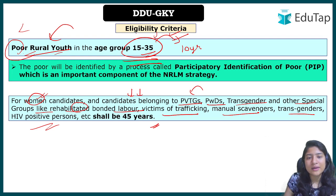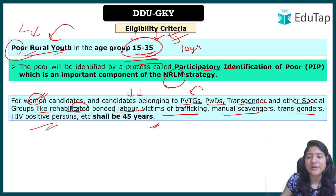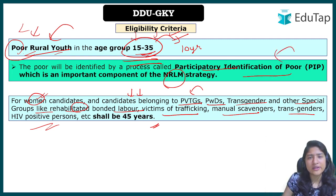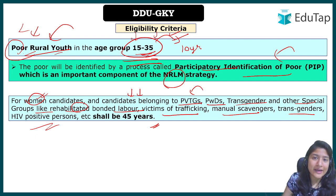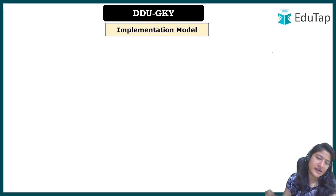To determine if a person is 'poor', the Participatory Identification of Poor (PIP) criteria under NRLM is used. Criteria include having a BPL card, or being an active MGNREGA laborer with at least 15 days of work in the past year, among other factors.